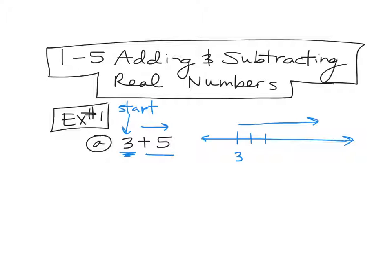1, 2, 3, 4, 5. And that puts us here. If you're counting that: 3, 4, 5, 6, 7, 8 is where we end up. So 3 plus 5 is 8. That would be your answer.